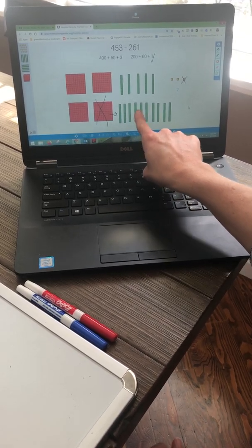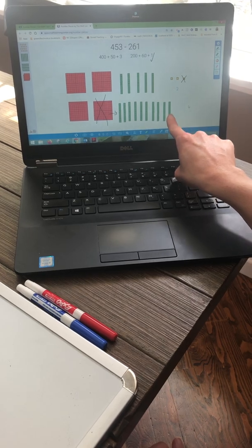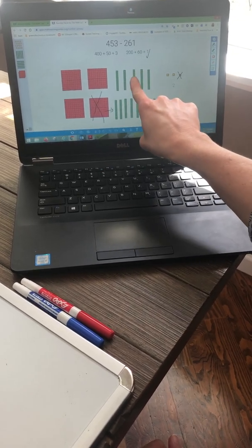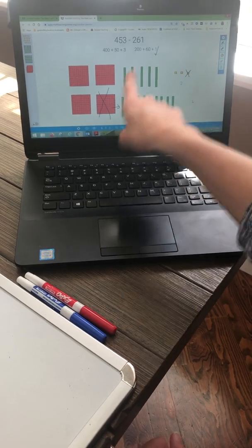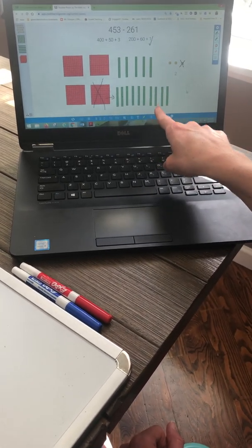So now I've got 1, 2, 3, 4, 5, 6, 7, 8, 9, 10, 11, 12, 13, 14, 15 tens. 15 tens is worth 150.